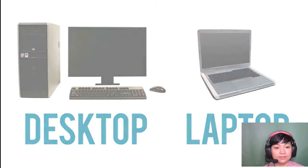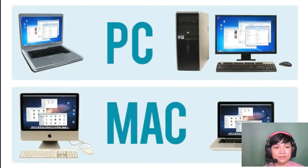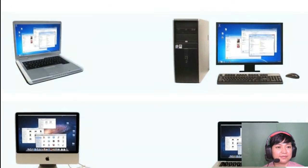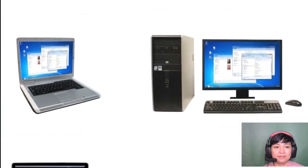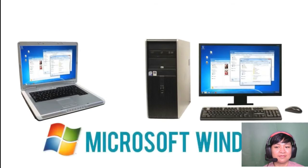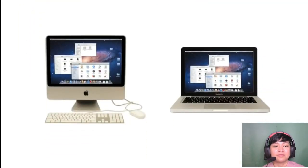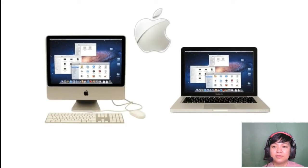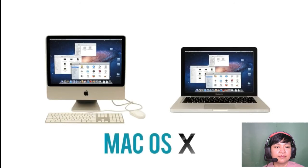Personal computers come in two main styles: PC and Mac. PCs are the most common type. There are many different companies that make them, and they usually come with the Microsoft Windows operating system. Macs, or Macintosh computers, are all made by one company, Apple, and they come with the Mac OS X operating system.